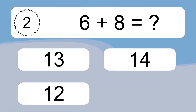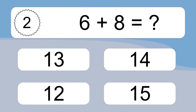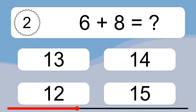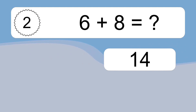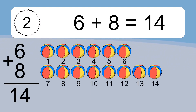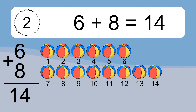6 plus 8 equals what? 6 plus 8 equals 14. Let's count it: 1, 2, 3, 4, 5, 6, 7, 8, 9, 10, 11, 12, 13, 14.